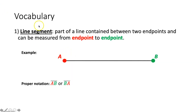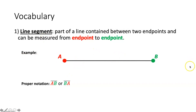First vocabulary term is a line segment. That's part of a line contained between two endpoints and can be measured from endpoint to endpoint. So here we have segment AB with a left endpoint at point A and a right endpoint at point B. The difference between a line and a line segment is that a line continues on in both directions forever — it has arrows at either end — whereas a line segment stops at both ends. It can be measured; it has a finite distance.